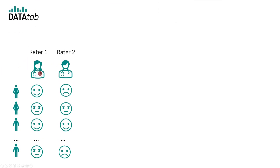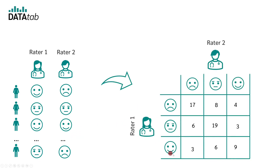Let's assume two doctors rated how satisfied they are with the success of their patient therapy. The doctors can answer with dissatisfied, neutral, and satisfied. We want to know how big the agreement between the two doctors is. Since we have an ordinal variable with the rank order dissatisfied, neutral, and satisfied, we determine the agreement with the weighted Cohen's kappa. First, we create a table with the frequencies of each response. Here we have our two raters, each of whom rated a total of 75 patients.